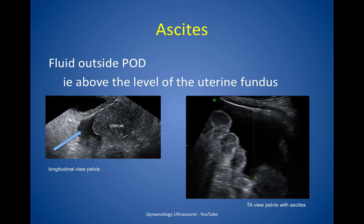Shadowing: it's important to look for shadowing — we've become rather used to ignoring shadowing as artefact, but when describing an adnexal lesion it's very important to look for shadowing. Ascites: the definition of ascites is fluid outside of the pouch of Douglas, which means fluid above the level of the uterine fundus. On the right hand side you can see extensive ascites on a transabdominal view of the pelvis.